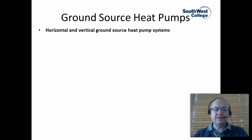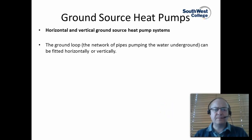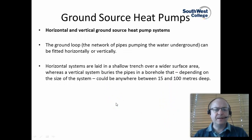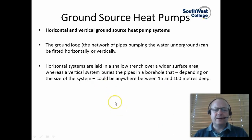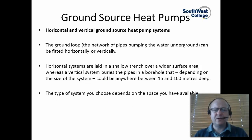To conclude this section on ground source heat pumps, just a little recap of what we've learned. Ground source heat pumps can use both horizontal and vertical systems. The ground loop or network of pipes can be fitted horizontally or vertically. Horizontal systems are laid in shallow trenches over a wide surface area, whereas vertical systems use boreholes that can be anywhere between 15-100 metres deep.